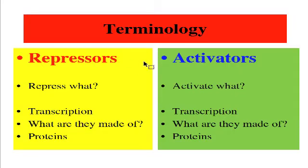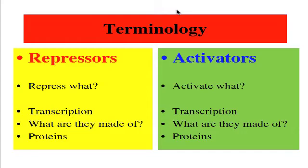Students must understand the difference between proteins referred to as repressors and other proteins referred to as activators. Repressors, when present on the DNA, reduce the amount of gene expression taking place. That means they reduce the rate at which RNA polymerase is transcribing a particular gene. For instance, if the gene was working at 80% before the repressor arrived, it may now be working at 30% or 10%, or in some cases not at all — 0%. So repressors either eliminate gene expression or reduce it to a lower level, repressing the gene expression at that location.